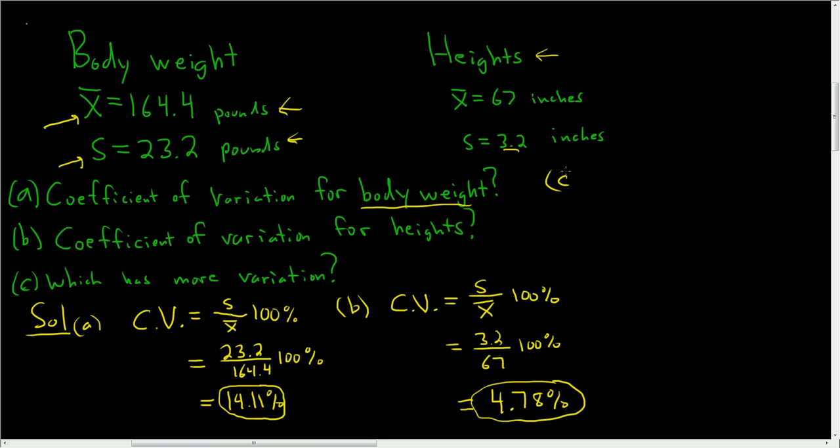Okay, now part C, which has more variation? Well, the body weights have more variation, so the answer to this is body weight.